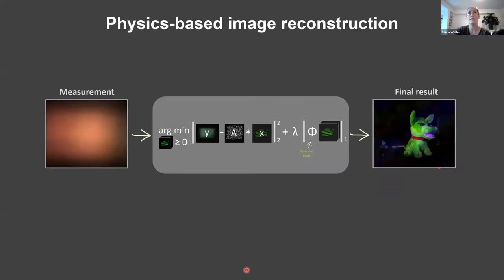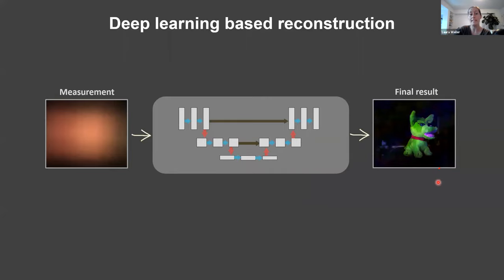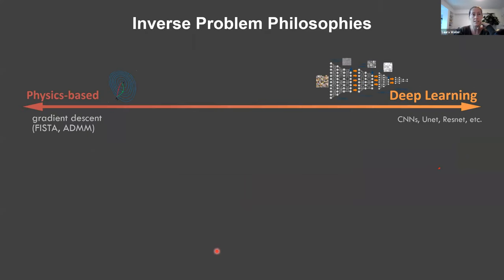I call this the physics-based or model-based image reconstruction solver: put in your input measurement, run it through this iterative optimization, and it spits out your final result. The other way is with a neural network — give it a bunch of input-output pairs, train a deep neural network that learns to predict the output from the input. You're throwing away all of the physics — the physical model or forward model A matrix — and letting the neural network figure it out on its own. You need a lot of training data for that, with pros and cons.